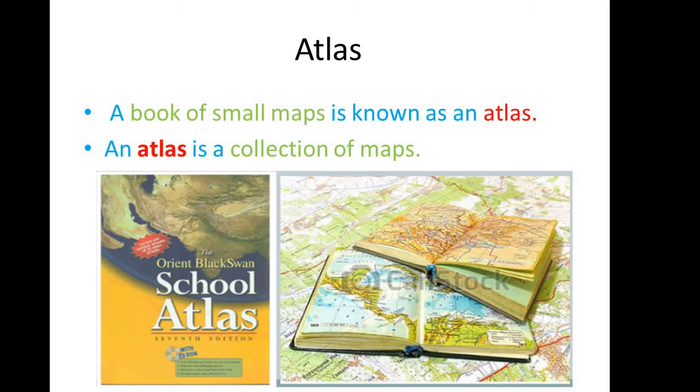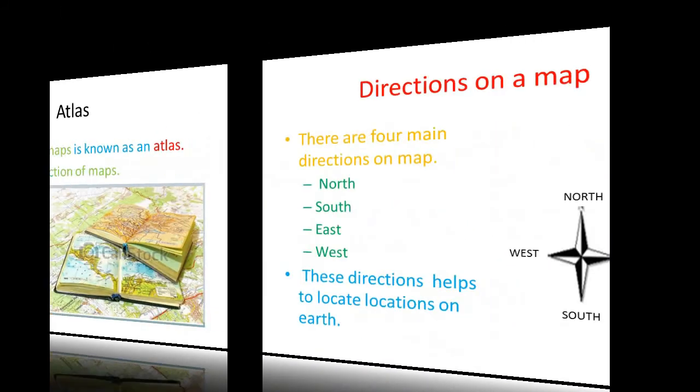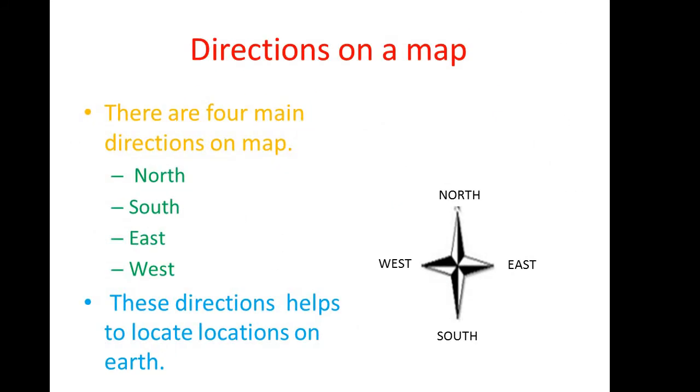Now, let's see what are the directions on a map. There are four main directions on a map: North, South, East, and West.